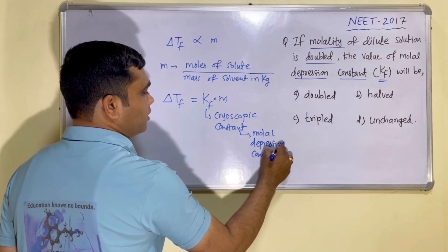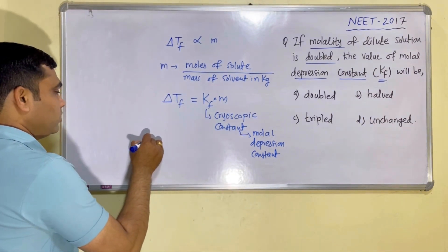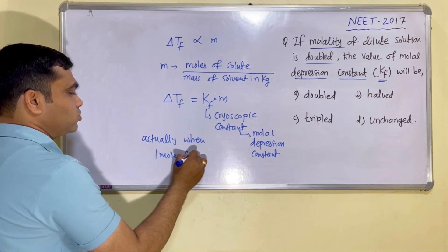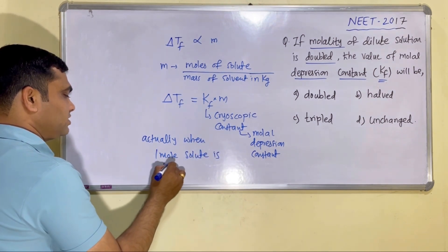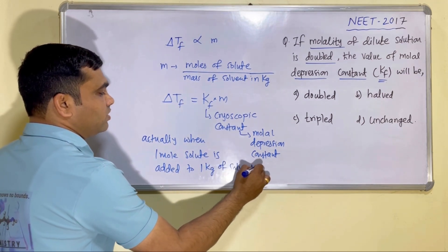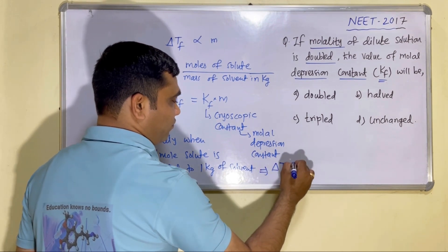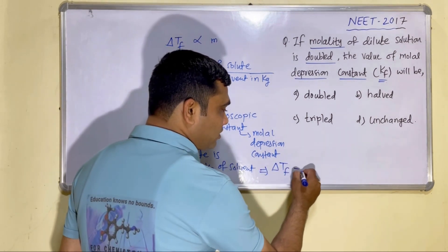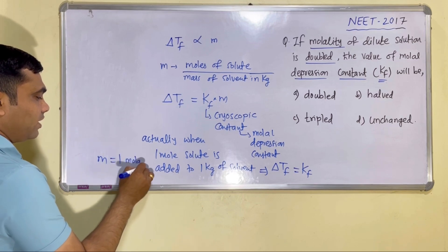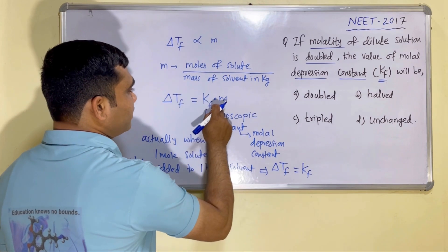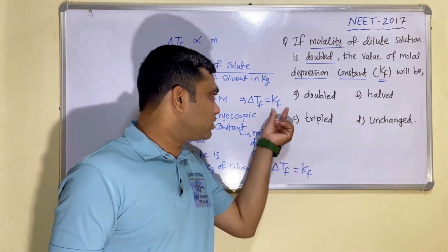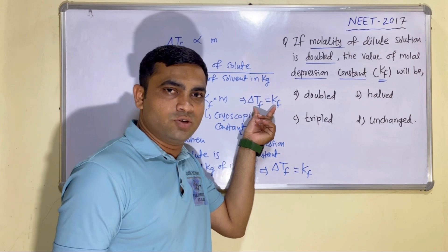Depression here means decreasing the freezing point. Actually, when one mole of solute is added to one kilogram of solvent, in that case the value of delta Tf is nothing but Kf — because one mole in one kilogram gives molality equal to one. And if I take molality as one, then delta Tf equals only Kf.